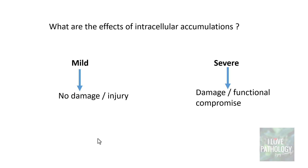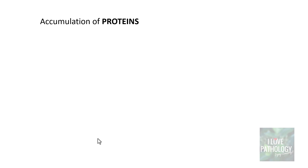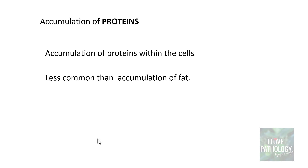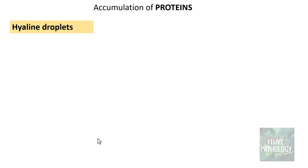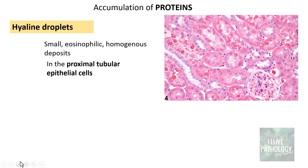Let's look at examples of protein accumulations within cells. Remember, protein accumulation is less common compared to fat accumulation. The first example is hyaline droplets. These are small eosinophilic homogeneous deposits found in the proximal tubular epithelial cells. Here is a histology of the kidney — you can appreciate the glomerulus, and these are the tubules containing eosinophilic homogeneous material within the proximal tubular cells.